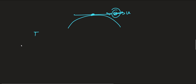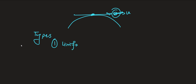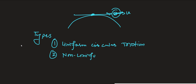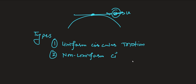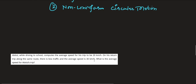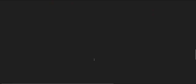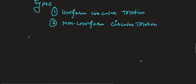Now, we have here two types of circular motion which we are going to discuss one by one. First one is uniform circular motion. We will deal with the uniform circular motion first. Let us see how to understand it.